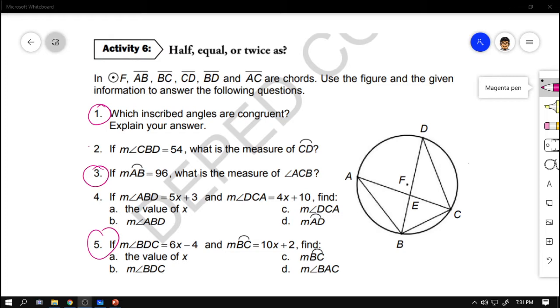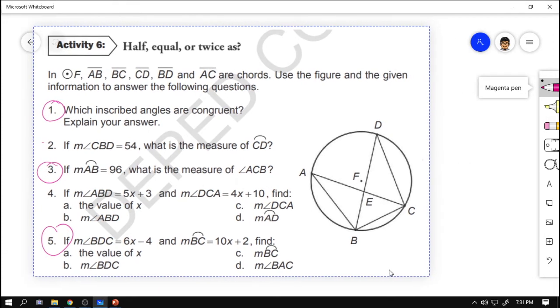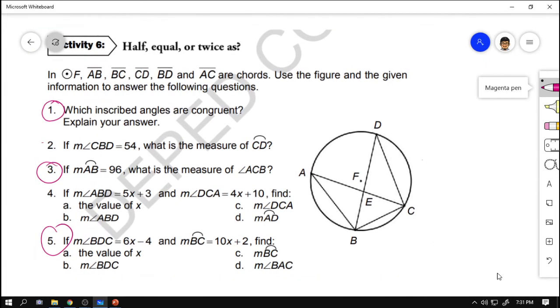For number 1, sabi niya, which inscribed angles are congruent? You have to explain your answer. The answer to number 1 is located in lesson 1B tutorial. The answer is there because it's the same figure, so get your answer there. For number 2 naman, if the measurement of angle CBD is 54, what is the measurement of arc CD? Let's begin answering number 2.